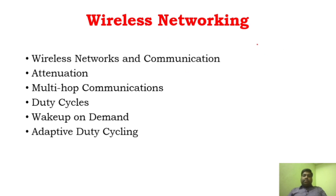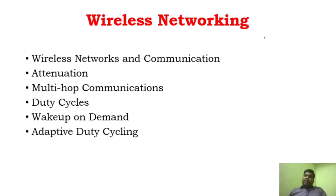Very importantly, you need to understand that whenever we transmit any particular wireless signal, every sensor node has to have a radio to communicate with its neighbors, to transmit signals, to receive signals, to receive information. When it comes to RF communication, which is wireless communication, definitely attenuation will take place.